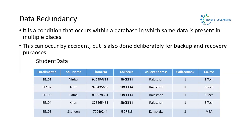Data redundancy can occur by accident — for example, entering the same data in many places by mistake — or it can be done intentionally for backup and recovery purposes. So both ways are possible.